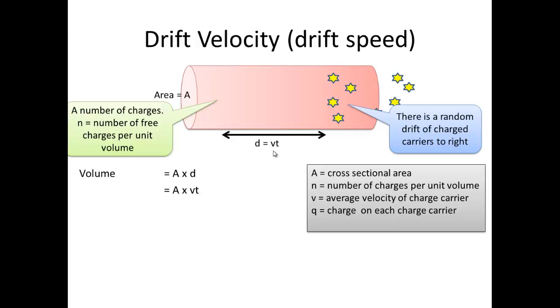Now if we know that there are n charge carriers per unit volume, the number of charges is basically going to be n times the volume. This is the total charge that moves, but we know that the volume is equal to Avt, so n times Avt gives the total number of charges.